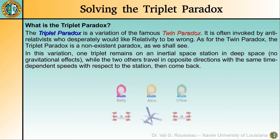In this tutorial, I'm going to show you how to solve the triplet paradox. This paradox is a variation of the famous twin paradox, and it is often invoked by anti-relativists who desperately would like relativity to be wrong, but they are just making fools of themselves by exhibiting their total lack of understanding of the theory. The triplet paradox is a non-existent paradox, as we shall see.